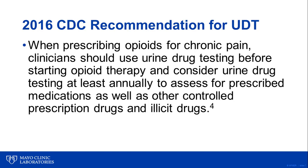In March of 2016, the CDC also issued new recommendations for prescribing opioid medications for chronic pain as part of the urgent response to the epidemic of overdose deaths. The new guideline aims to improve the safety of prescribing and curtail the harms associated with opioids, including opioid use disorder and overdose. In regards to urine drug testing, the CDC specifically recommended that when prescribing opioids for chronic pain, clinicians should use urine drug testing before starting opioid therapy, and consider urine drug testing at least annually to assess for prescribed medications, as well as other controlled prescription drugs and illicit drugs.